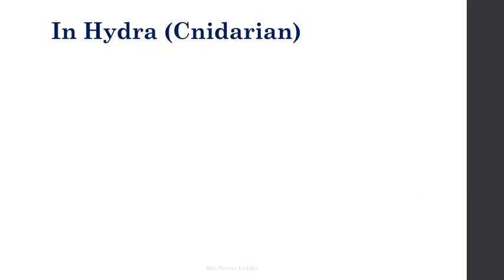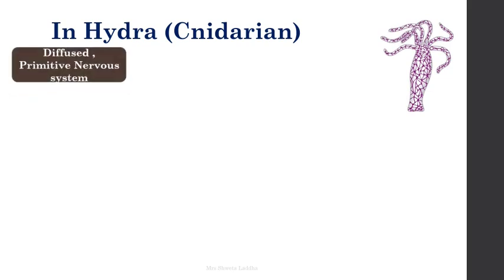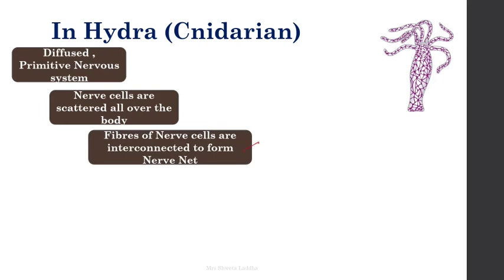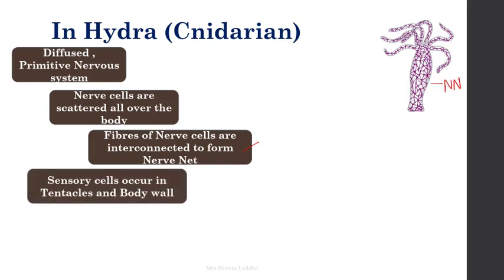In the case of Hydra, an example from Cnidaria, they show the presence of a nerve net — a diffuse type of nervous system, which is very primitive. They are the first organisms to have something related to nerves. Nerve cells are scattered all over the body and the fibers of the nerves are interconnected, forming a nerve net.